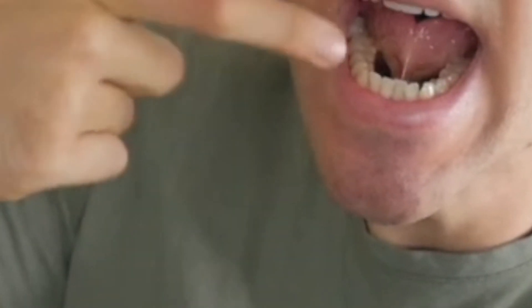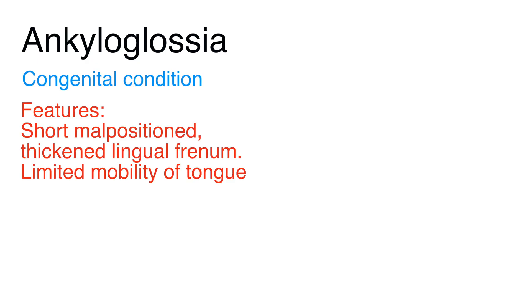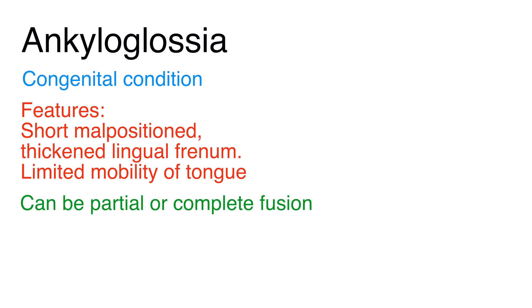Tongue tie is a congenital condition and we normally see a short, malpositioned, and thickened lingual frenum. When you look at the tongue, it can't really be extended and it has limited movements. The fusion of the frenum could be partial or complete.